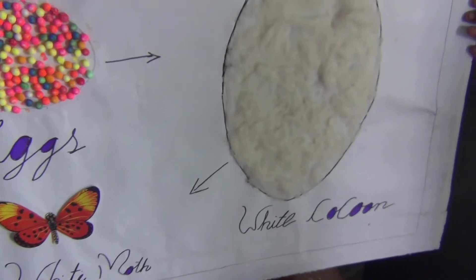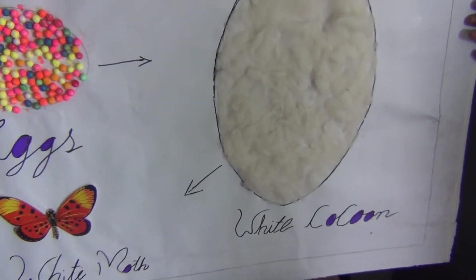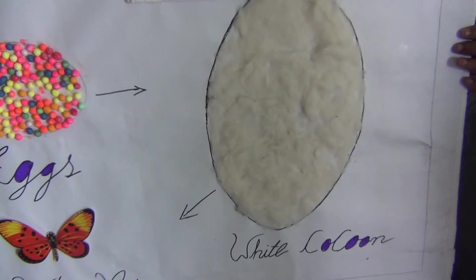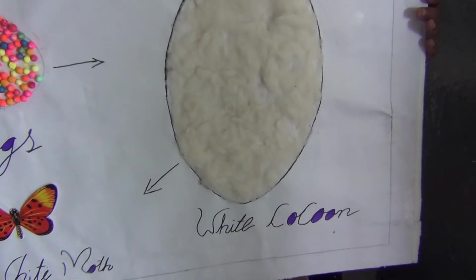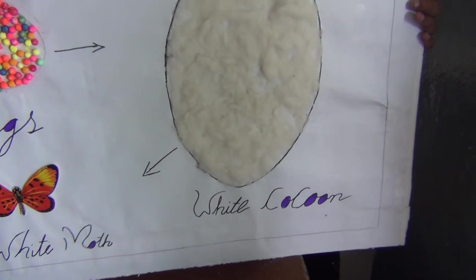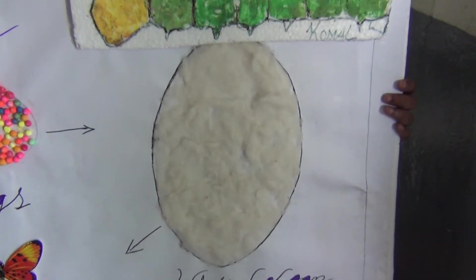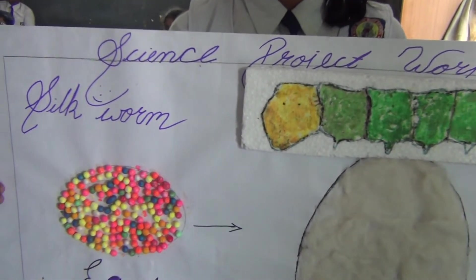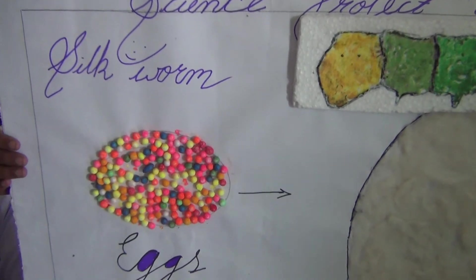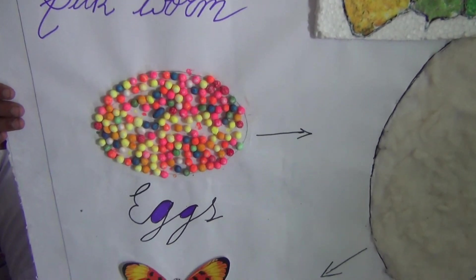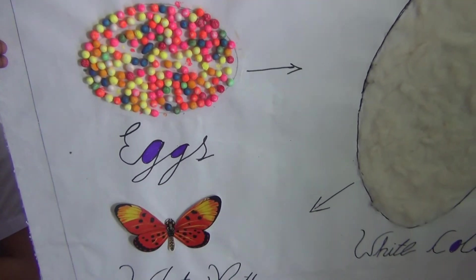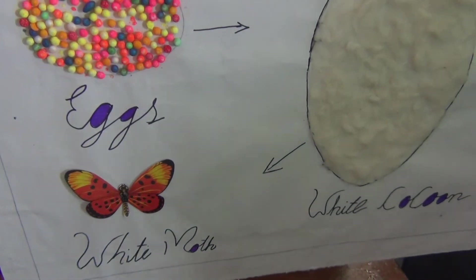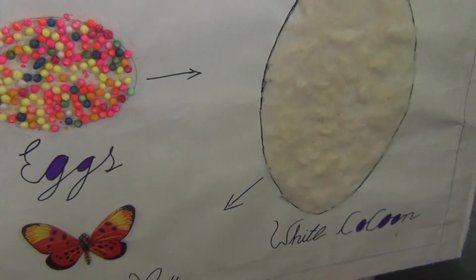After 30 or 35 days, she will stop eating and go and settle to the place. After 2 or 3 weeks, they die. Thank you.